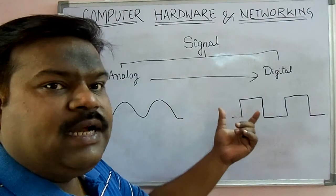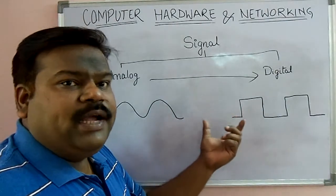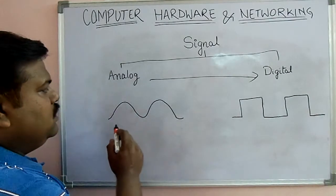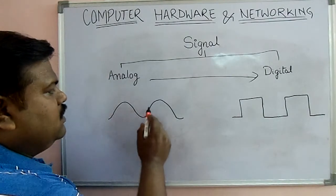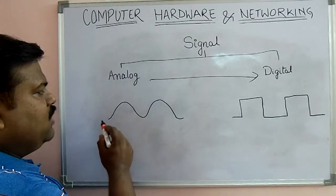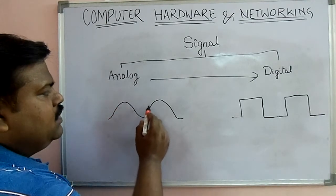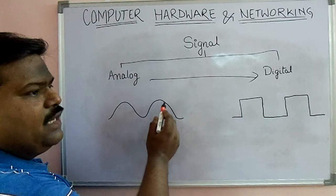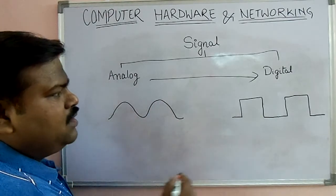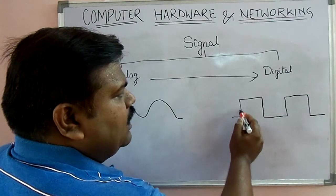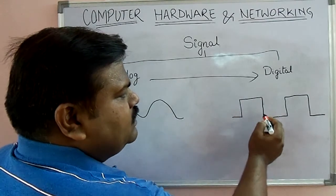So let us understand what is the difference between analog and digital. In analog the signal is like this, it means it gradually increases and gradually decreases. But in case of digital it randomly increases and randomly decreases.